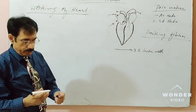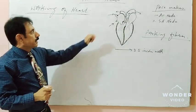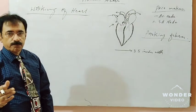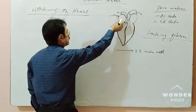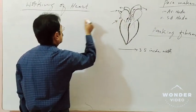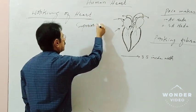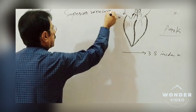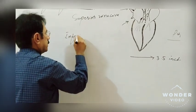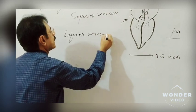Working of the heart during its normal activities. The impure deoxygenated blood collected from all the body parts enters the right atrium through veins called the superior vena cava and inferior vena cava.